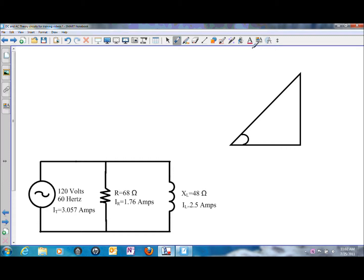If we look at the circuit the way that it is, we have 1.76 amps of resistive current and 2.5 amps of reactive current, and that gives us a total current of 3.057 amps.